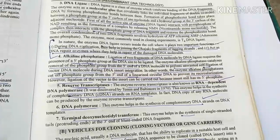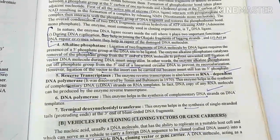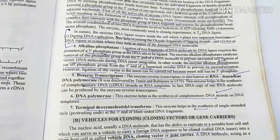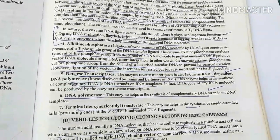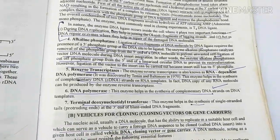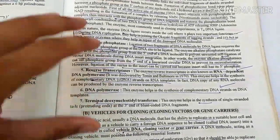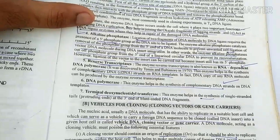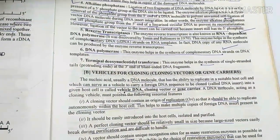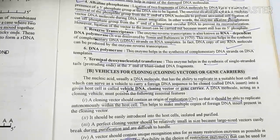Another enzyme is alkaline phosphatase. Alkaline phosphatase removes the phosphate group from the five-prime end of the DNA. Next is reverse transcriptase — this enzyme converts RNA into DNA. DNA polymerase is used for DNA replication and synthesis of the complementary strand.